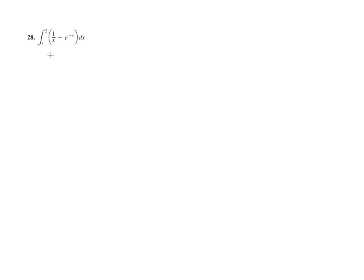So anyway, we'll just evaluate the integral of 1 over x is the natural log of the absolute value of x, and then the integral of e to the negative x is e to the negative x times negative 1, so it'll be plus e to the negative x, and we'll evaluate that from 1 to 2.